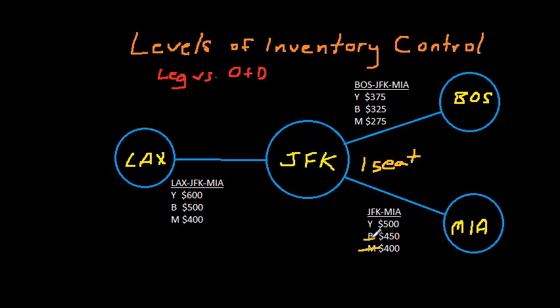Well once the system shuts down the B and M classes on the JFK to Miami leg, it's effectively closing down those classes for the other itineraries as well. Because a customer who wanted to purchase the B fare from Los Angeles to Miami would need it to be available on both legs.